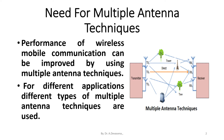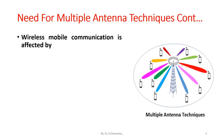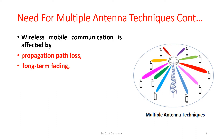For different applications, different types of multiple antenna techniques are used. Wireless mobile communication is affected by propagation path loss, long-term fading, and short-term fading.